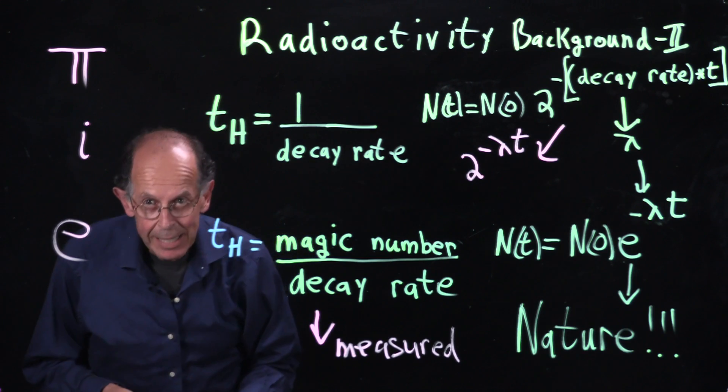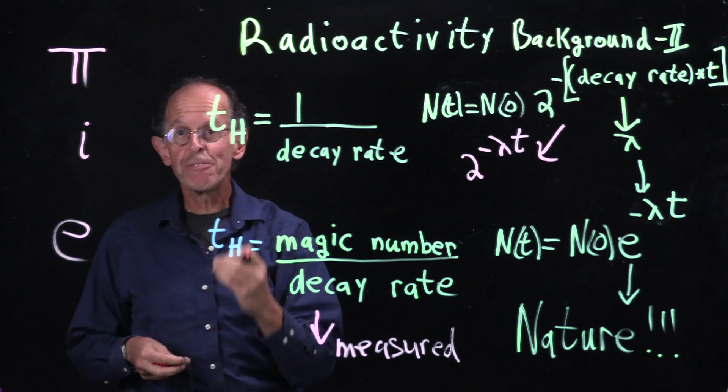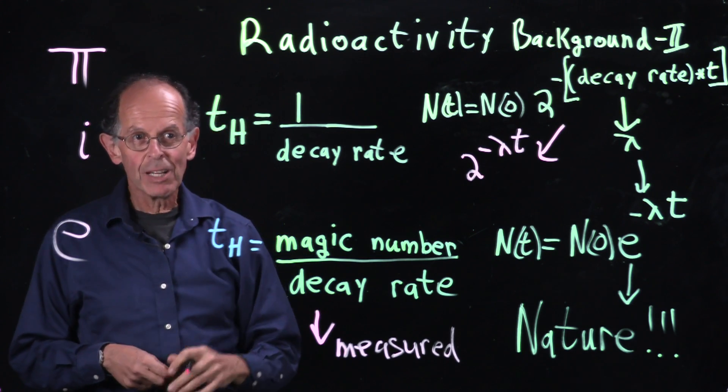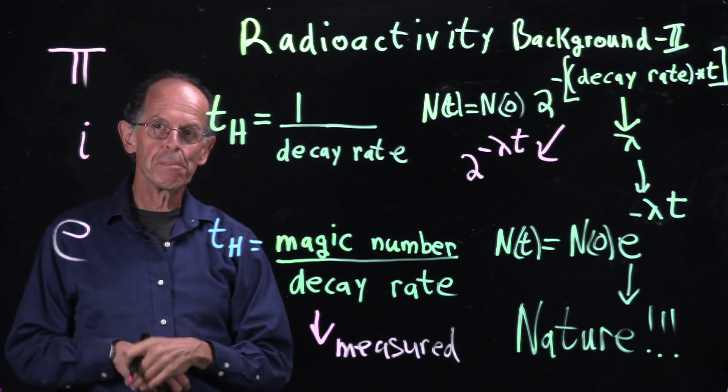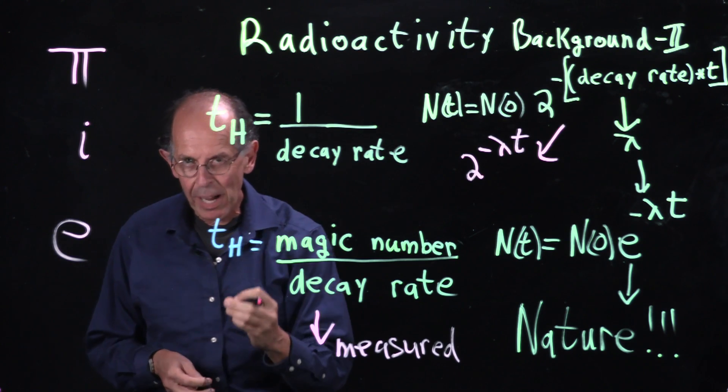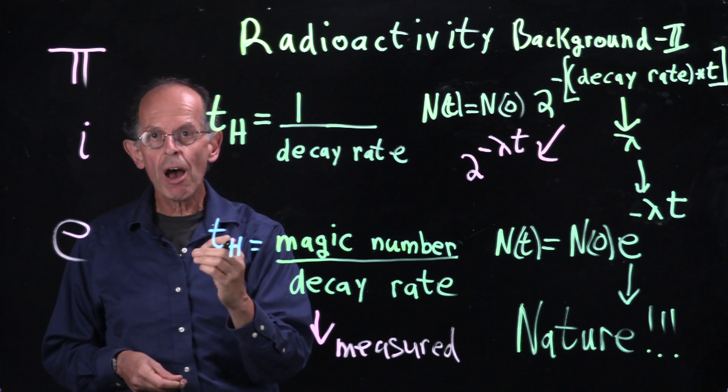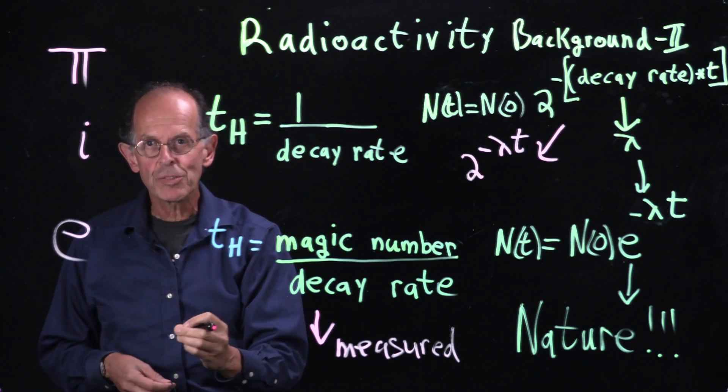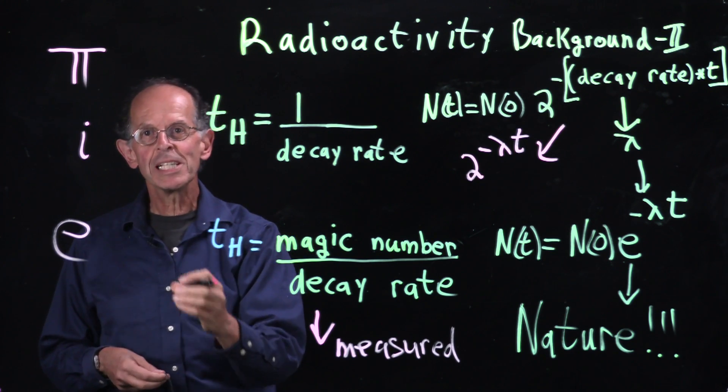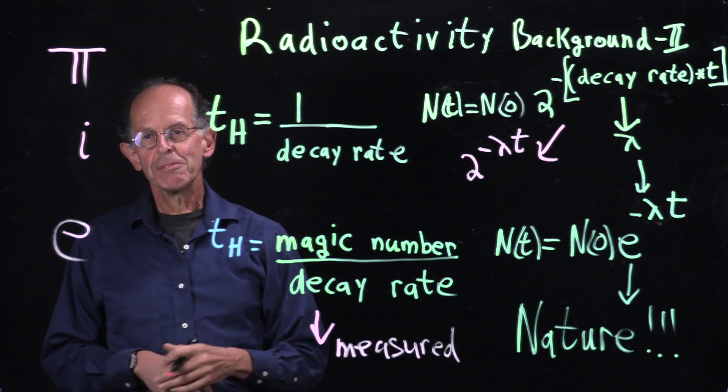Now where does e come from? It comes from your very nice banker. Suppose you put money in the bank and you got compound interest, not every year, not every six months, but continuously as the period evolved.